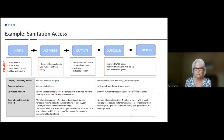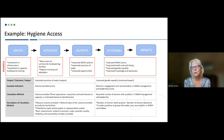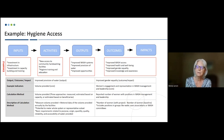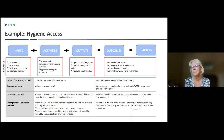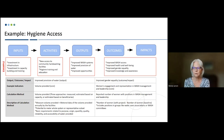The final example for hygiene access involves investments in new access to community handwashing facilities and hygiene training and education. An example output would be improved provision of water or improved opportunities, leading to outcomes such as improved gender equality and improved knowledge and awareness. The table below again shows examples of how we work through that in the report.